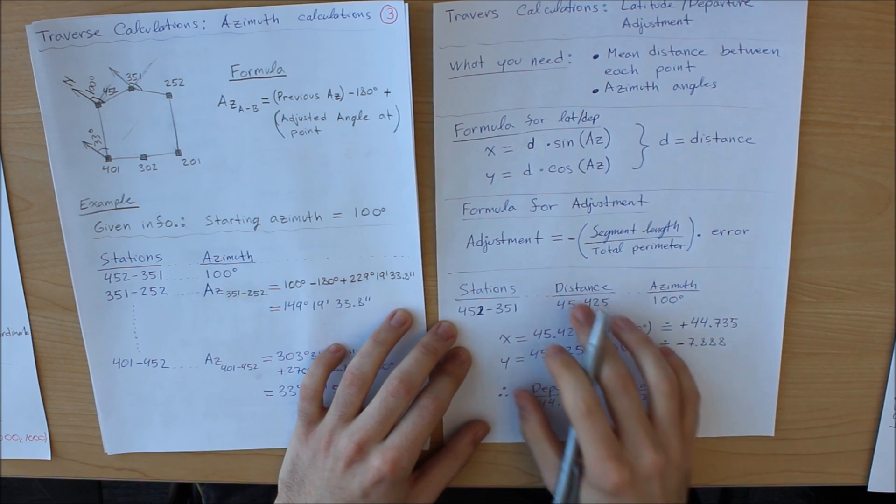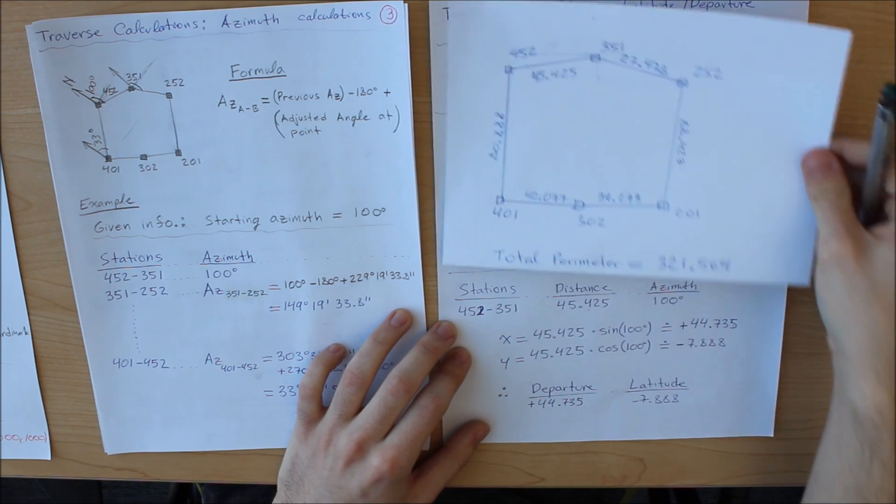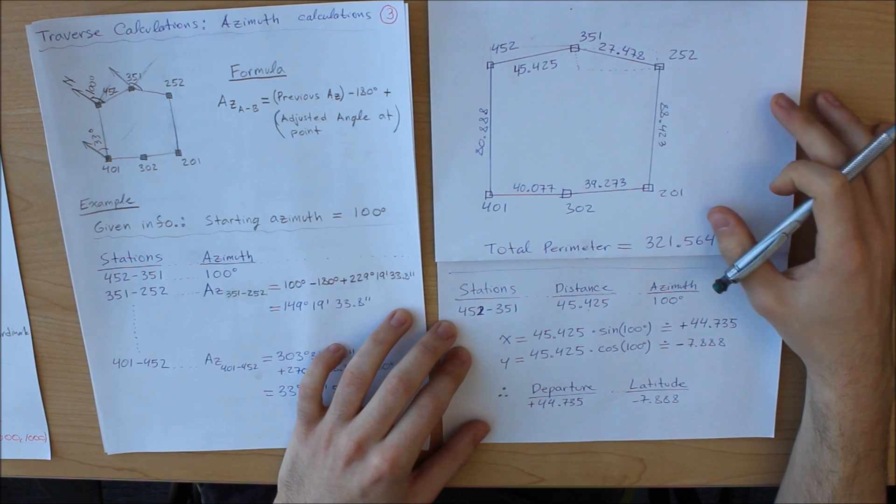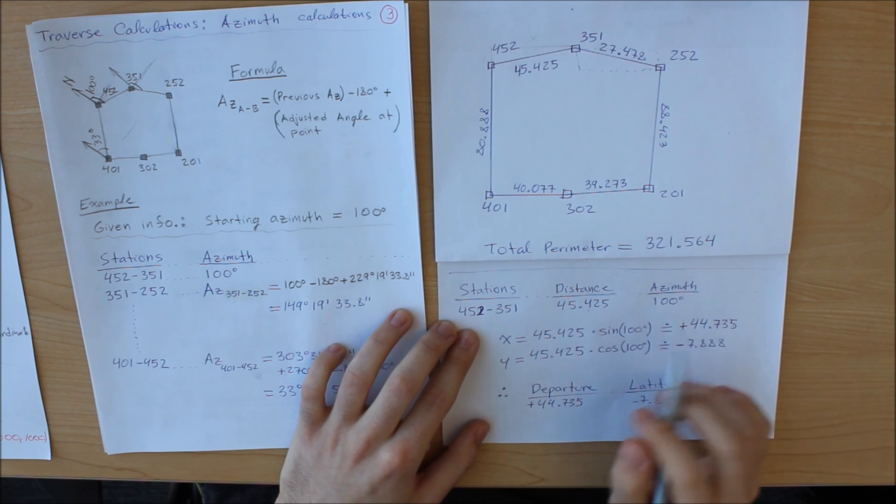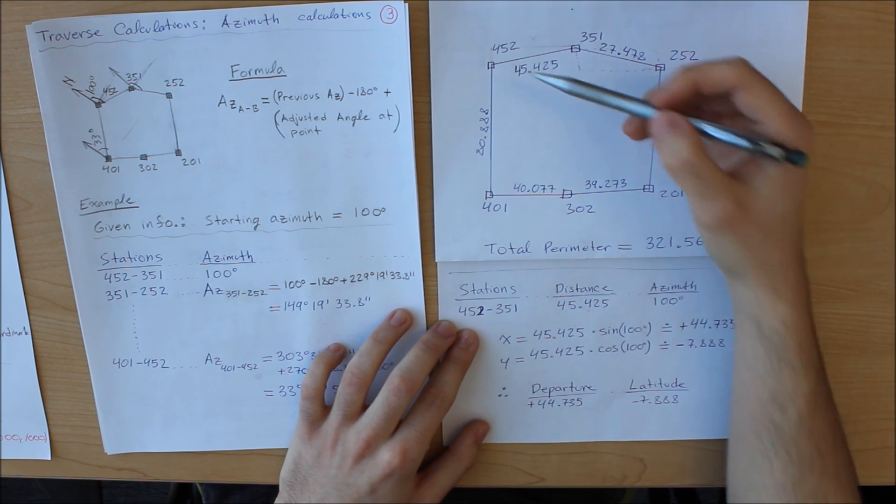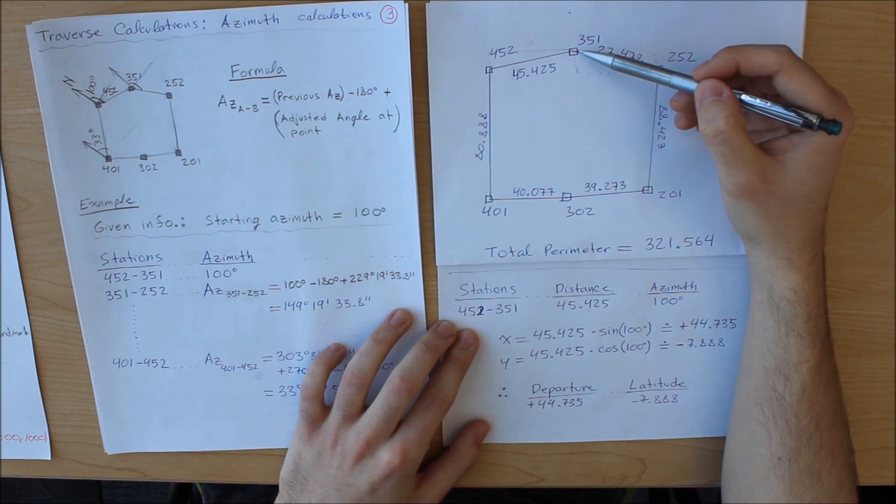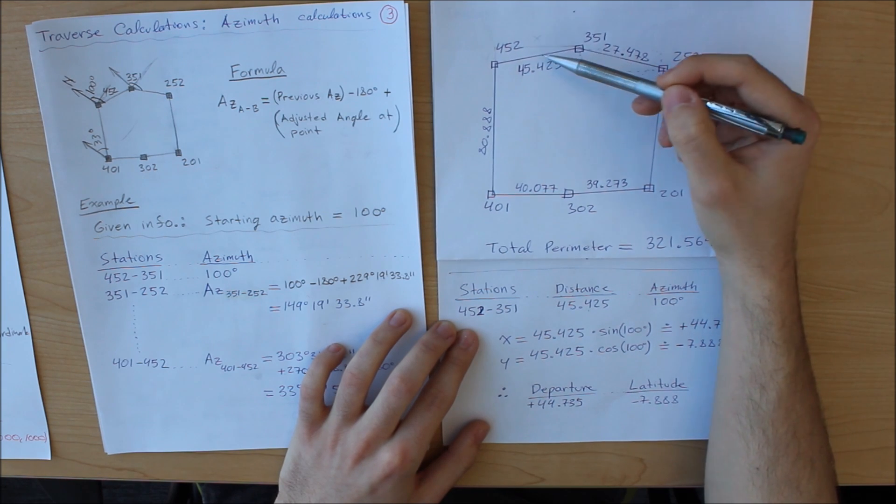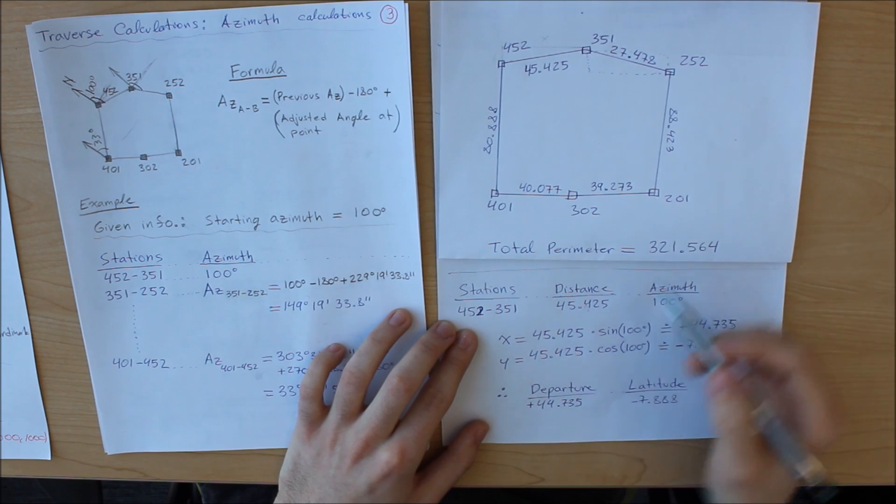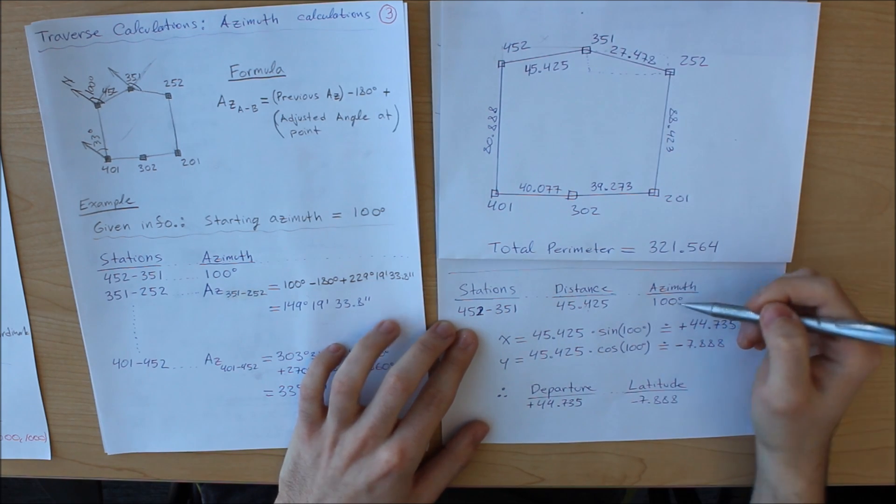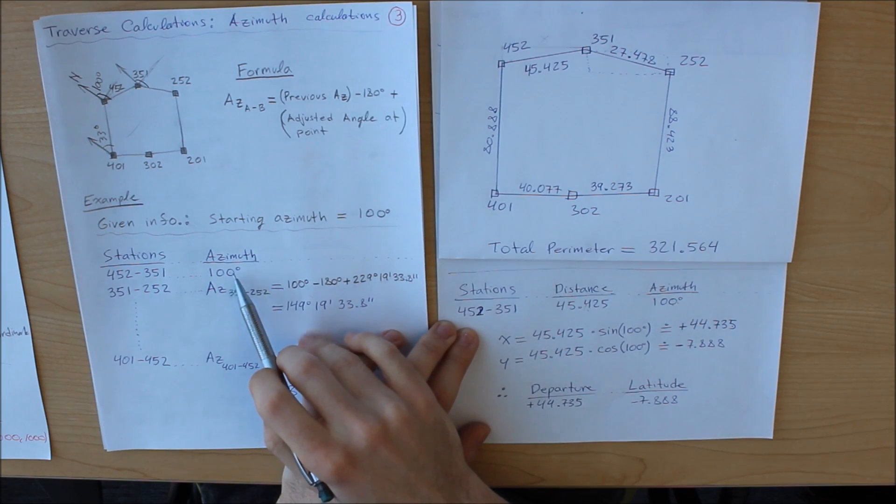Now here's an example of how we're going to do it. I'm just going to put this right here just so you can get a visual aid of how this actually works. So I'm going to use only one station right here, but you must perform this calculation for each individual set of stations. So 452, that is this point, to 351 right here, so this point to this point. The distance here is 45.425 and the azimuth here is 100 degrees as we've gotten from our previous calculation.